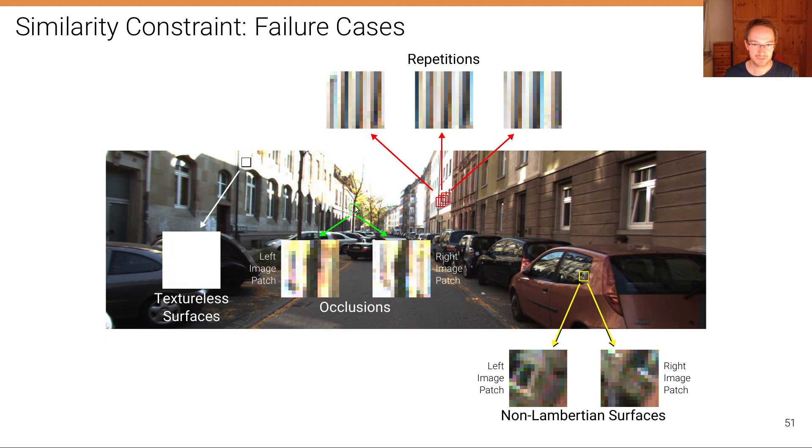However, if we look at this patch here, we have the tree in front of the building, and if we look from the left image and from the right image, then the patch will look very different, because the background actually changes. This is something we've discussed before in the context of disparity discontinuities and the violation of the fronto-parallel assumption. Some of these artifacts can be reduced by learning, but not all of them.